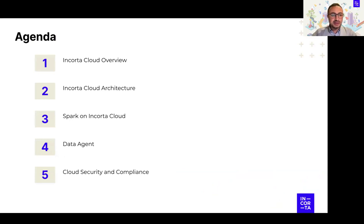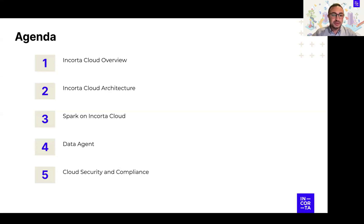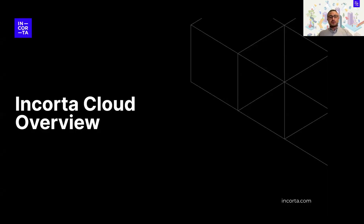Our agenda for today covers five main points. First is an Incorta Cloud overview — basically a refresher of what my colleagues covered in the last couple of sessions. Then we'll take a deeper dive into Incorta Cloud architecture, talk about Spark on Incorta Cloud, and finally get a quick overview of Data Agent and security and compliance.